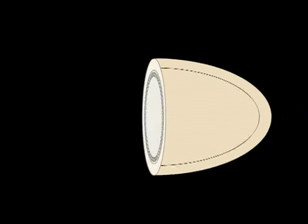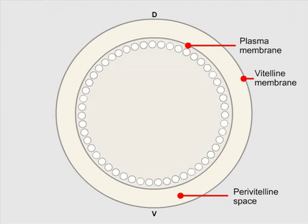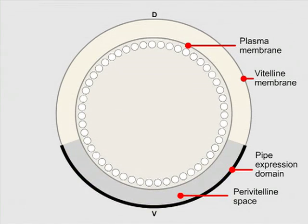Pattern formation during Drosophila embryonic development is guided by asymmetric cues along the anterior-posterior and dorsal-ventral axes. Asymmetry along the dorsal-ventral axis is manifested at the end of oogenesis by the uniform expression of the gene pipe in the follicle cells covering the ventral 40% of the oocyte.